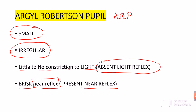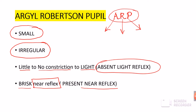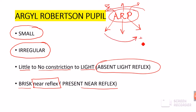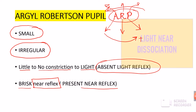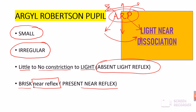This can be remembered using a mnemonic — the same as Argyle Robertson pupil: A means accommodation, R is reflex, and P is present. So accommodation reflex is present, and the pupillary light reflex is absent. Reading from behind: pupillary reflex is absent and accommodation reflex is present in Argyle Robertson pupil. This is called light-near dissociation.